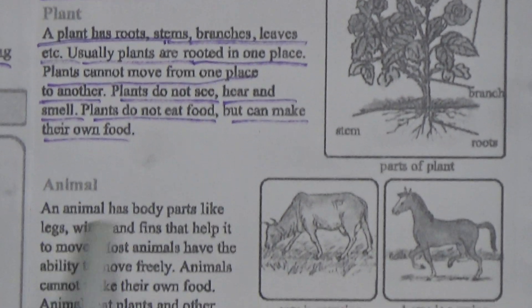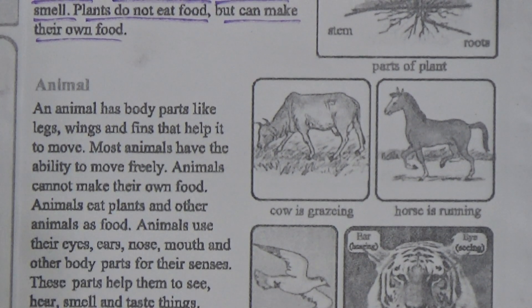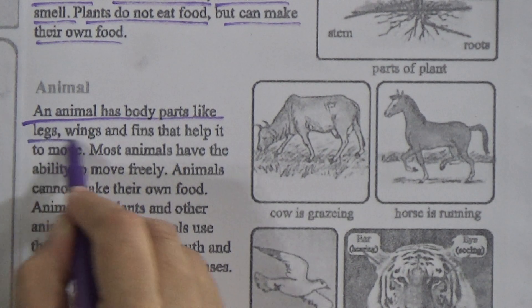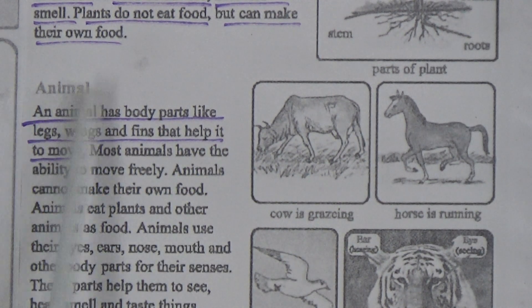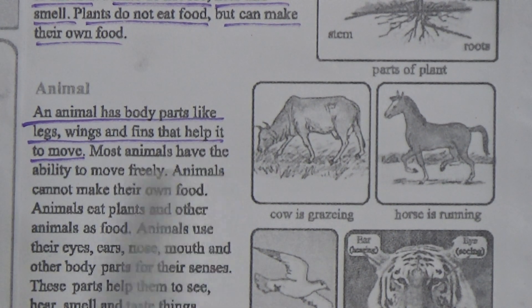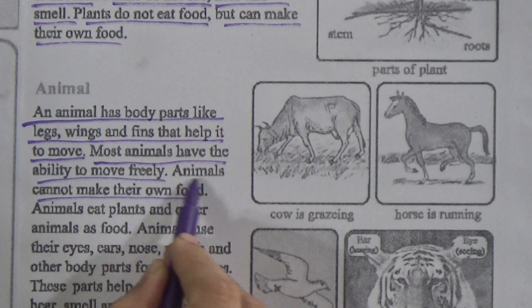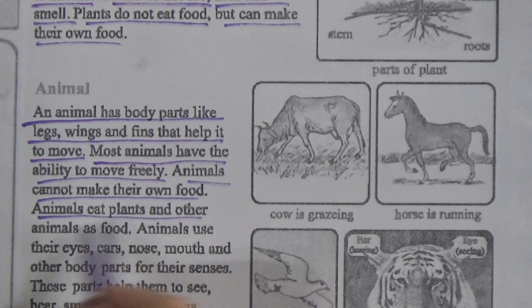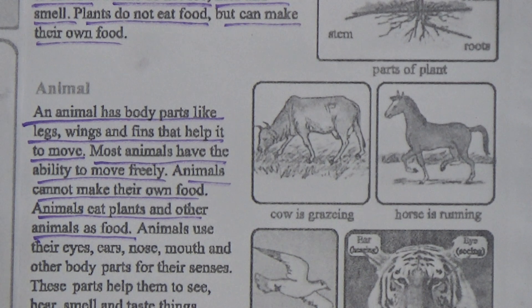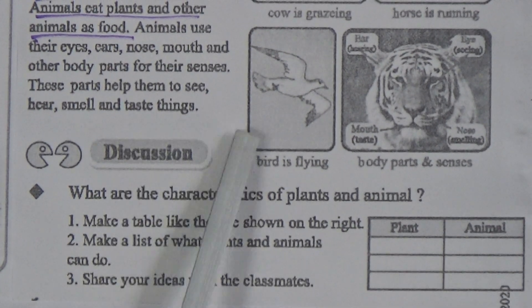An animal has body parts like legs, wings and fins that help it to move. This is also a question-answer - memorize it. Most animals have the ability to move freely. Animals cannot make their own food - animals eat plants and other animals as food. Animals use their eyes, ears, nose, mouth and other body parts for their senses, which help them to see, hear, smell and taste things.